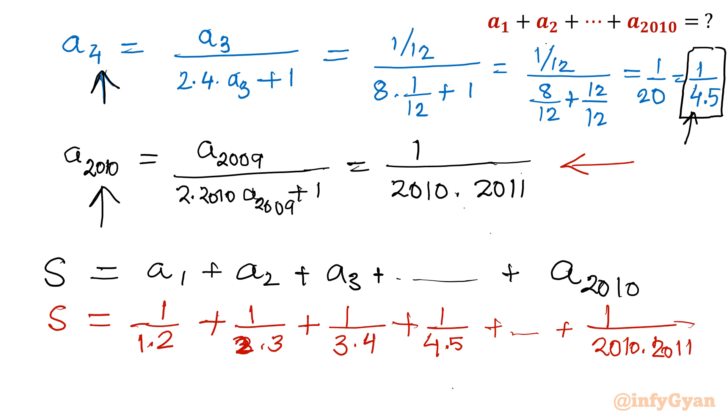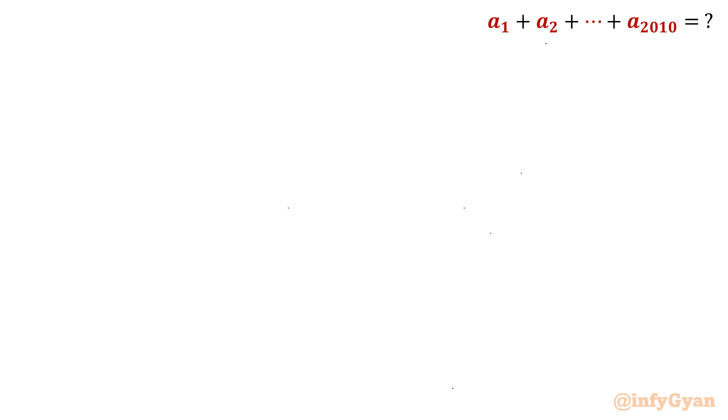Now if you will see, the general term is 1/(n(n+1)). So Sn, if I will write 1/(n(n+1)), using partial fractions you can write this one as 1/n - 1/(n+1). Once you will take LCM, it will become (n+1-n)/(n(n+1)), so 1/(n(n+1)). Let's apply to the given S.